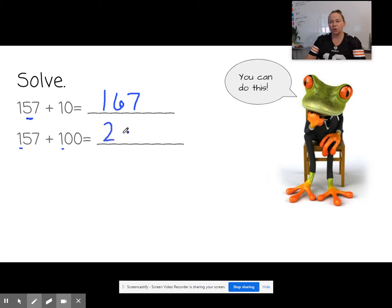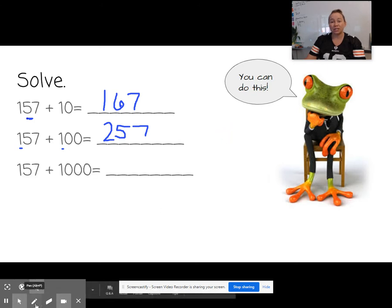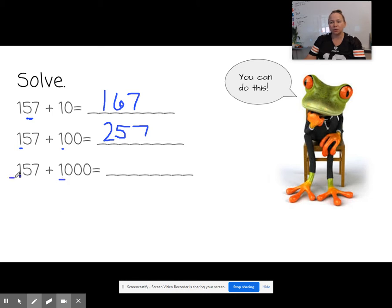157 plus 10. If we're adding to the 10s, it would be 167. All right, let's try another one. How about 157 plus 100? Well, we're adding a 100 to the 100s. That would give us 257.